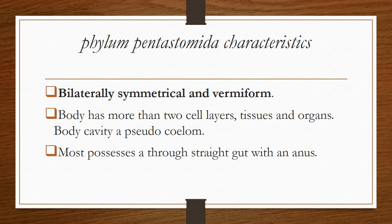The characteristics of Phylum Pentastomida are: first, they are bilaterally symmetrical and vermiform. Second, the body has more than two cell layers with tissues and organs, and the body cavity is a pseudocoelom. Third, food is processed through a straight gut with an anus. Thank you, this concludes the presentation on Phylum Pentastomida.